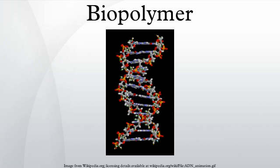Cellulose is the most common organic compound and biopolymer on Earth. About 33% of all plant matter is cellulose. The cellulose content of cotton is 90%, while wood is 50%.